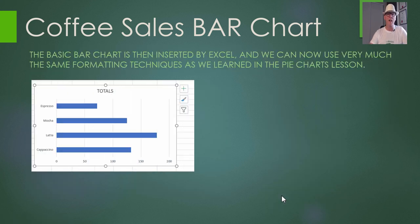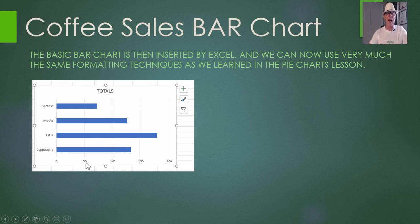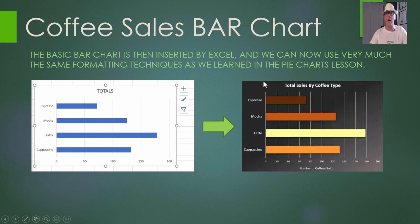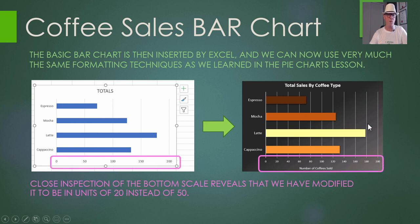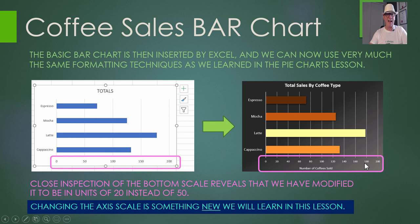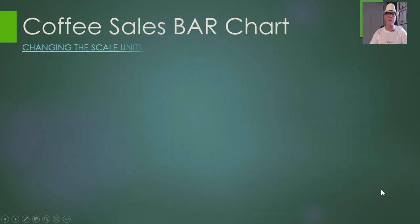Then go to the Insert tab on the ribbon, go to Charts, and click on the Column or Bar chart option. We're going to do the 2D bar. After you select that, Excel will make a basic bar chart for you. We're going to make it nicer colors in a coffee theme, and we're also going to change the scale across the bottom — put it in 20s instead of 50s.